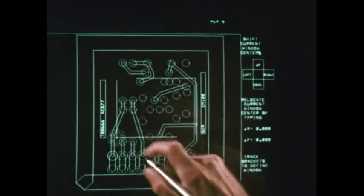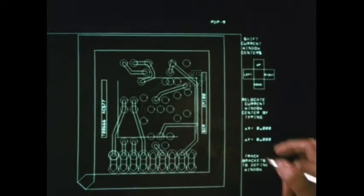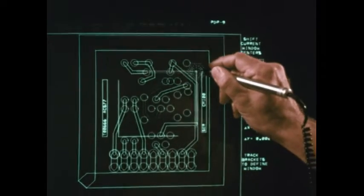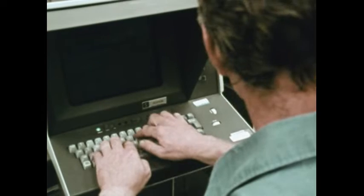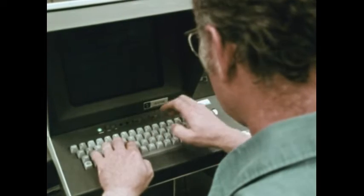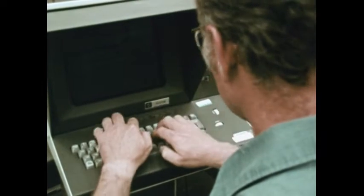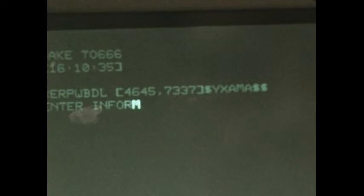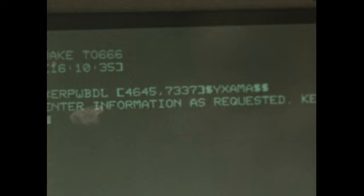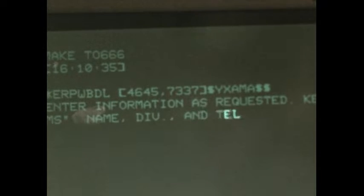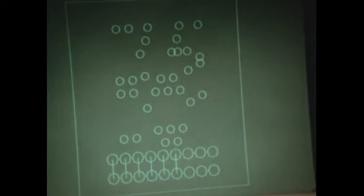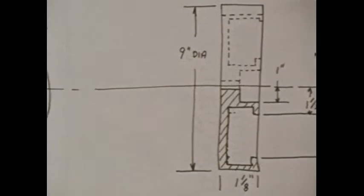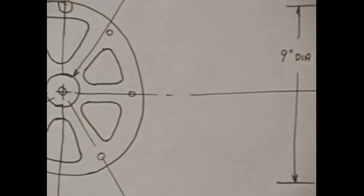Interactive graphic systems were first applied to the electronic design and drafting areas. The use of these computer-aided techniques has simplified the design process for numerous printed wiring boards. The success of this design and drafting system prompted investigations into further uses of the computer.